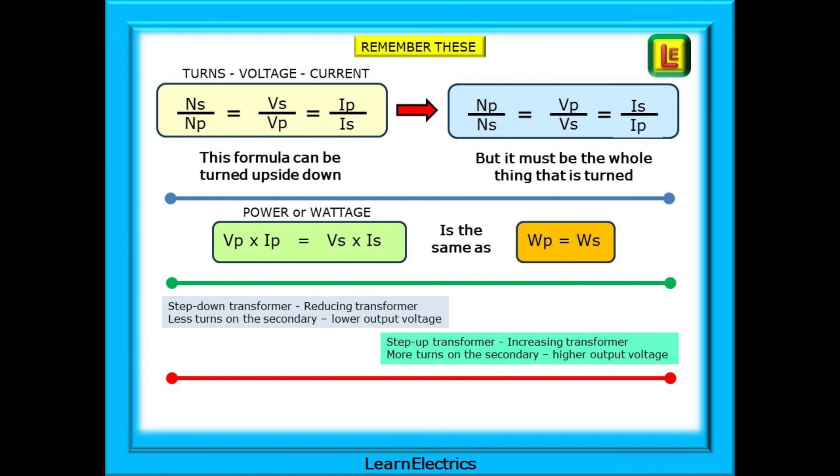And the power or wattage of a transformer can be found with the bottom formula. And do remember that in a perfect transformer with no losses, the wattage on the primary side will always match the wattage on the secondary side.